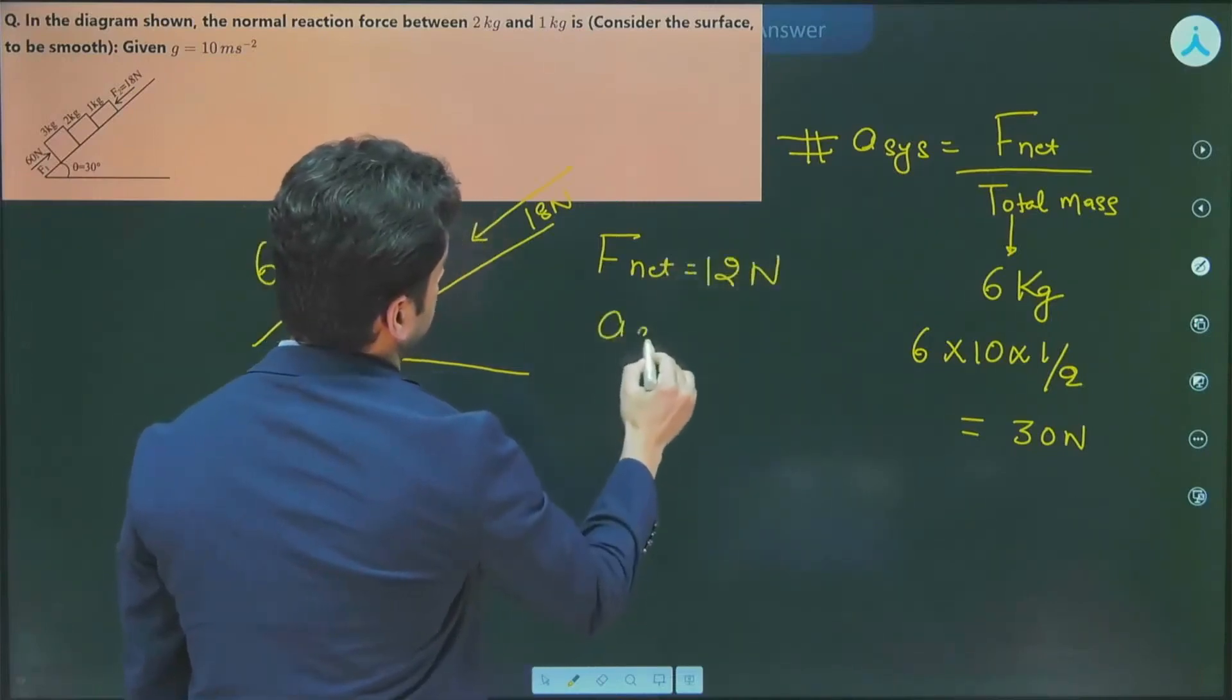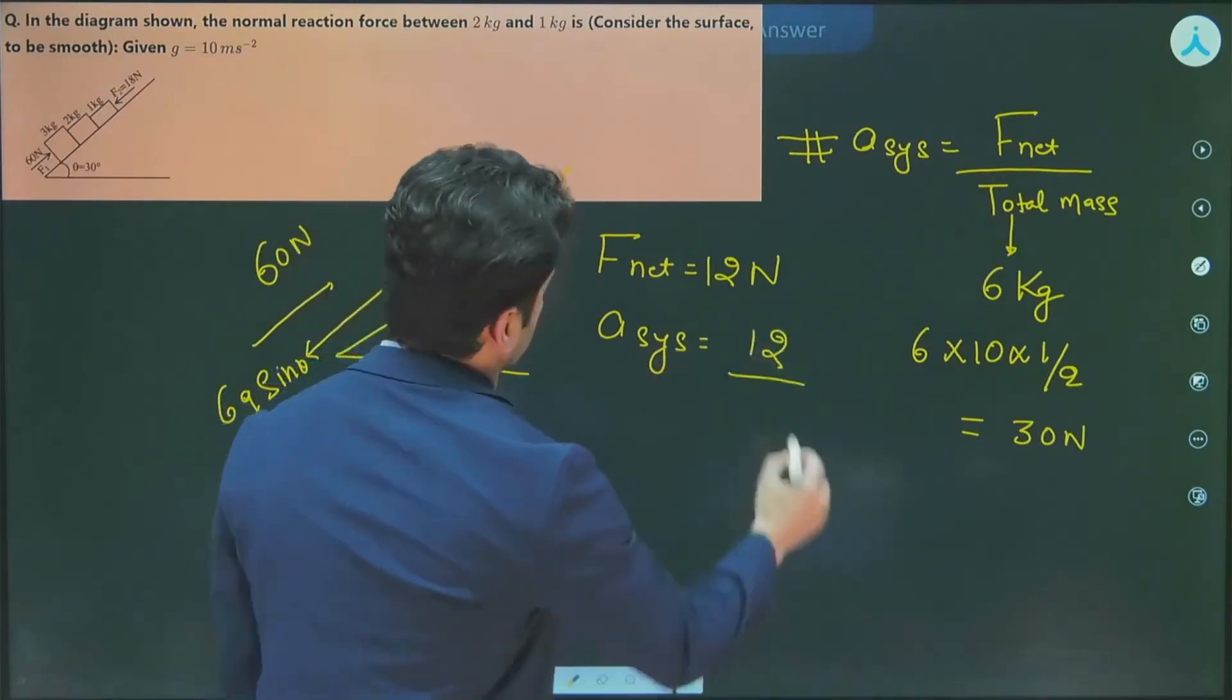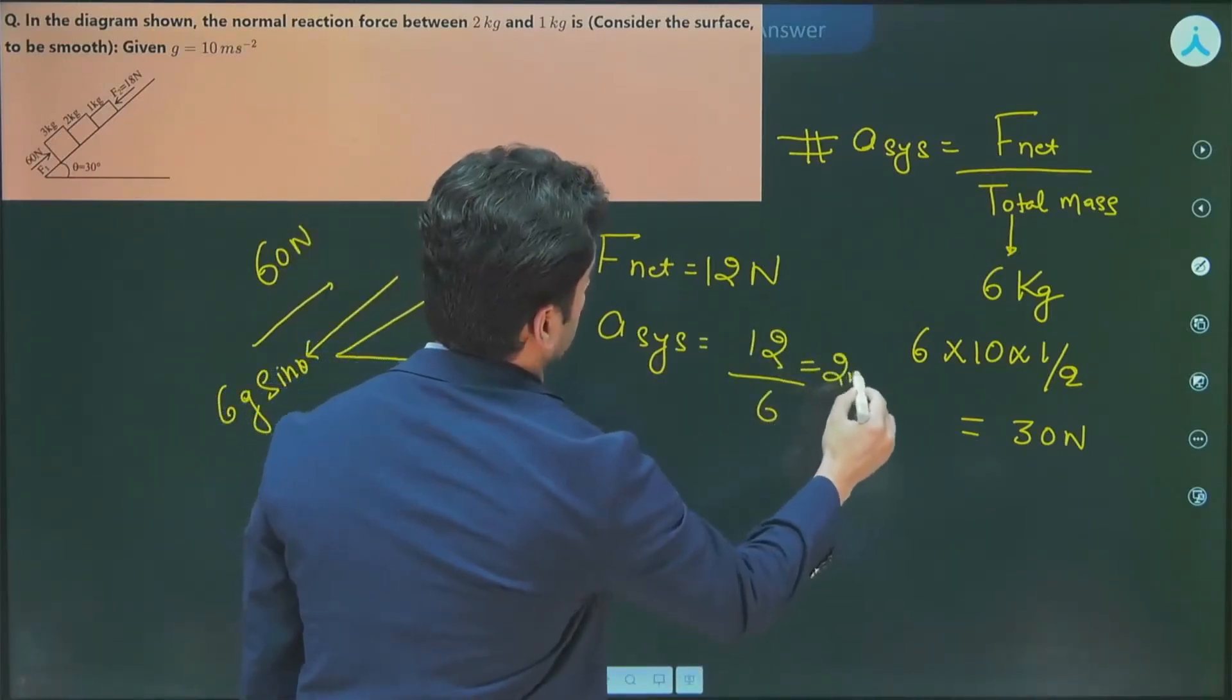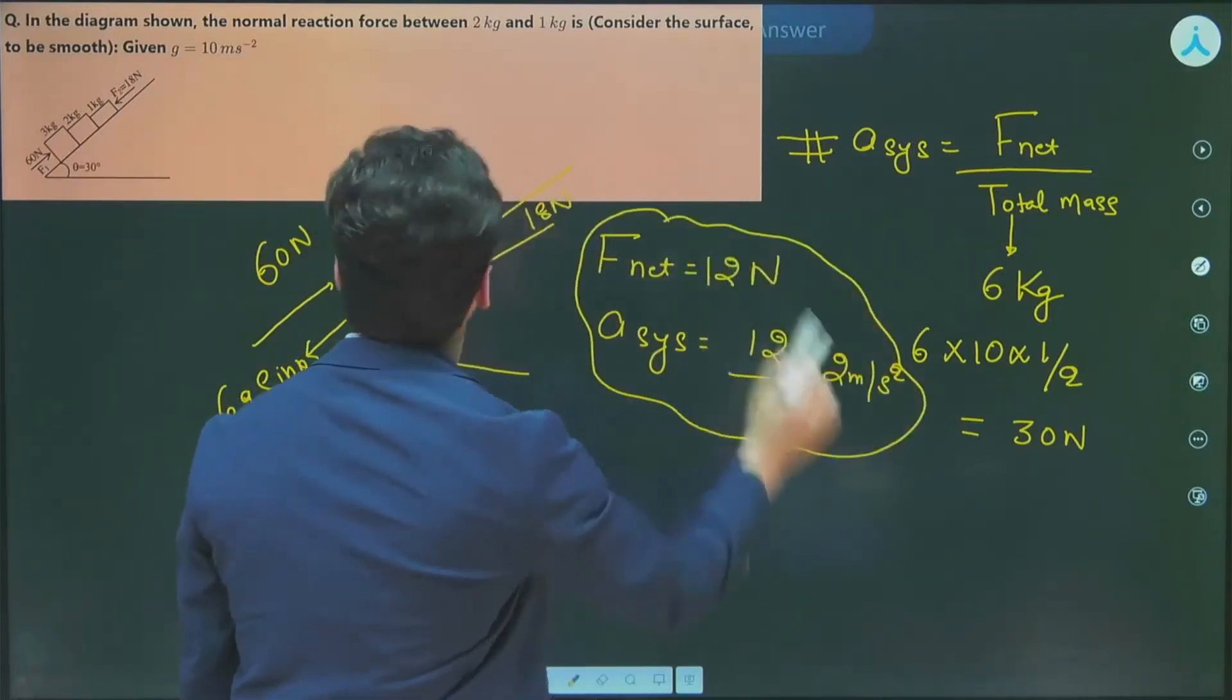So acceleration of system we are going to calculate. Acceleration of system: net force divided by the total mass, 12 by 6, so it is 2 meter per second square. We just got the acceleration of system and the net force.